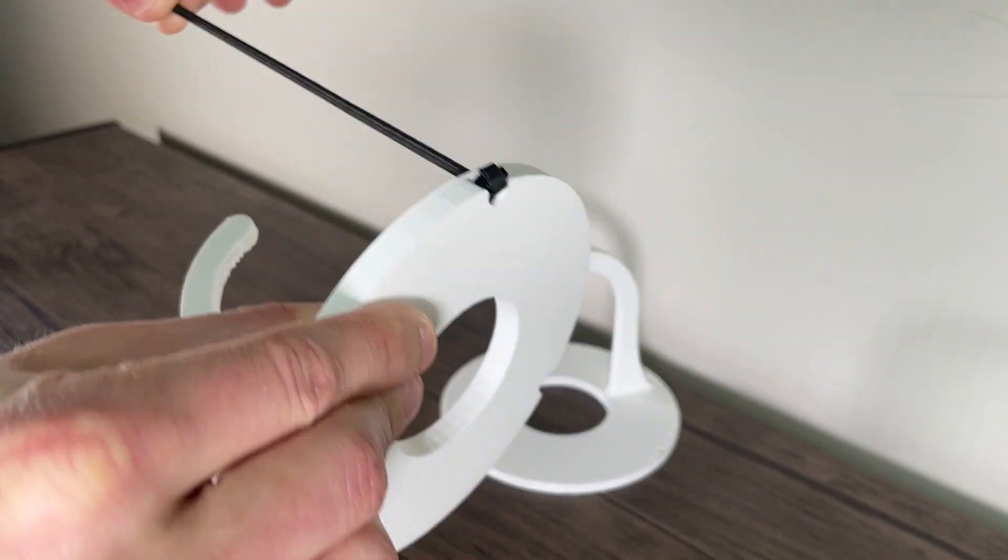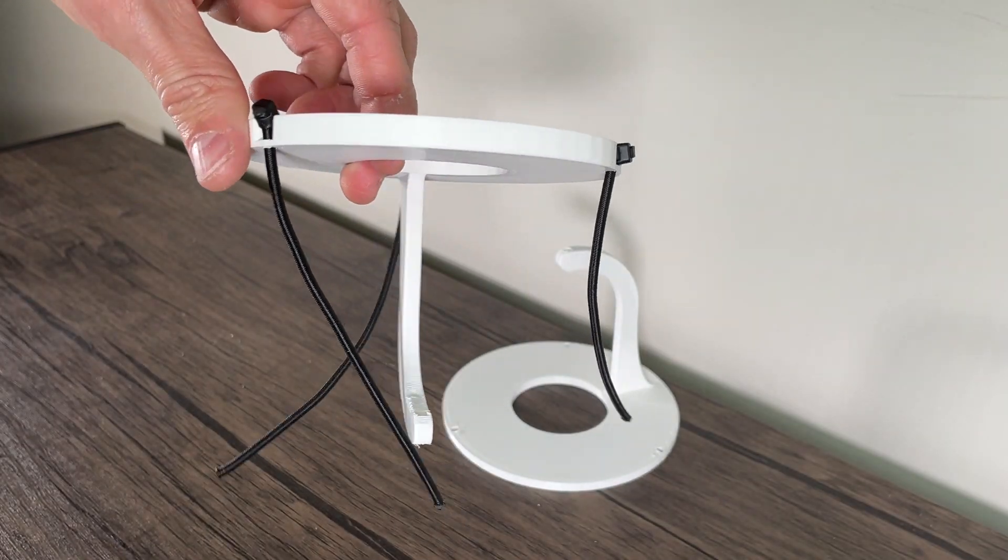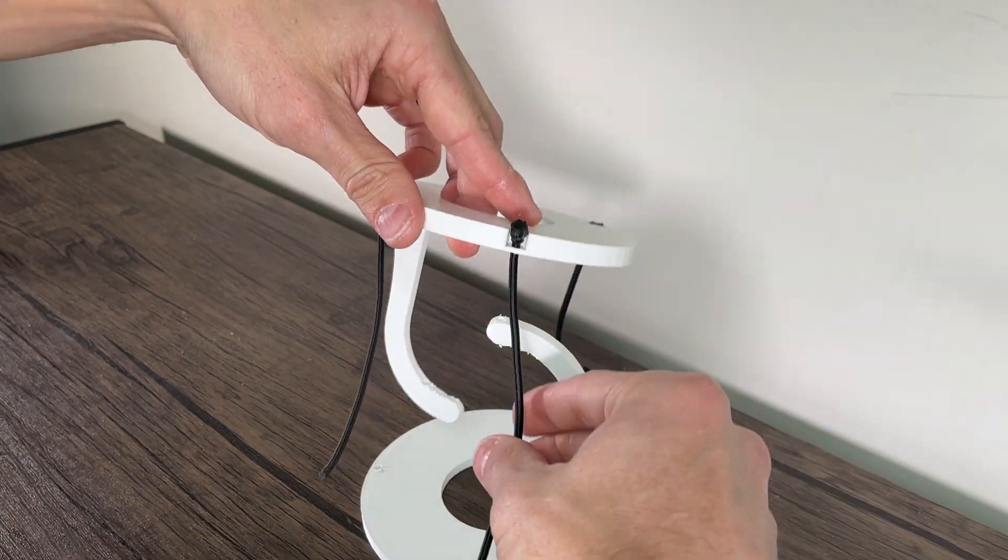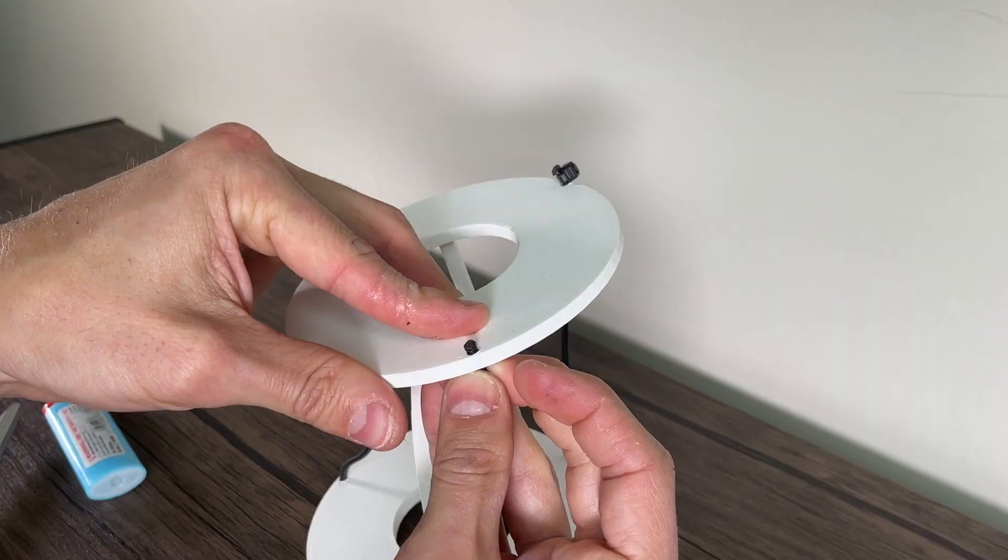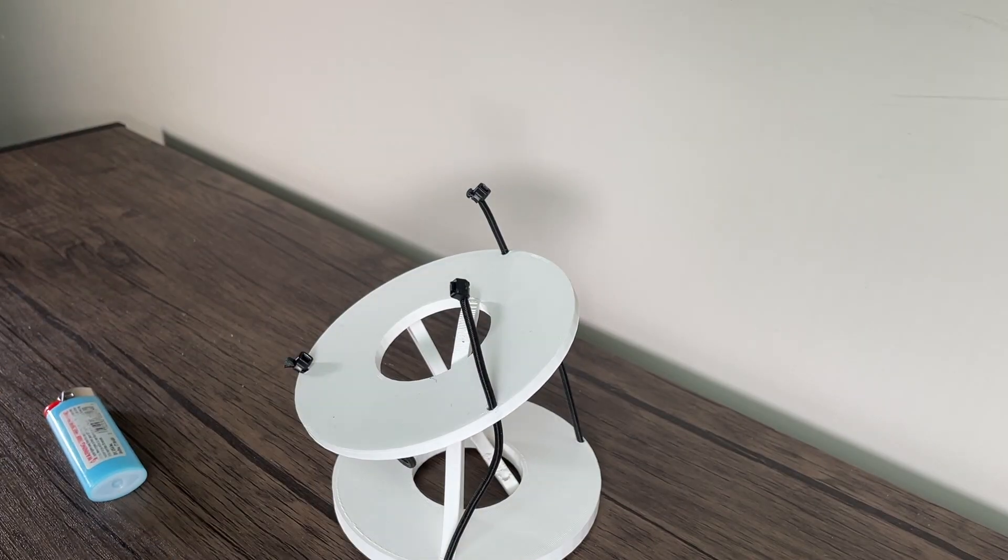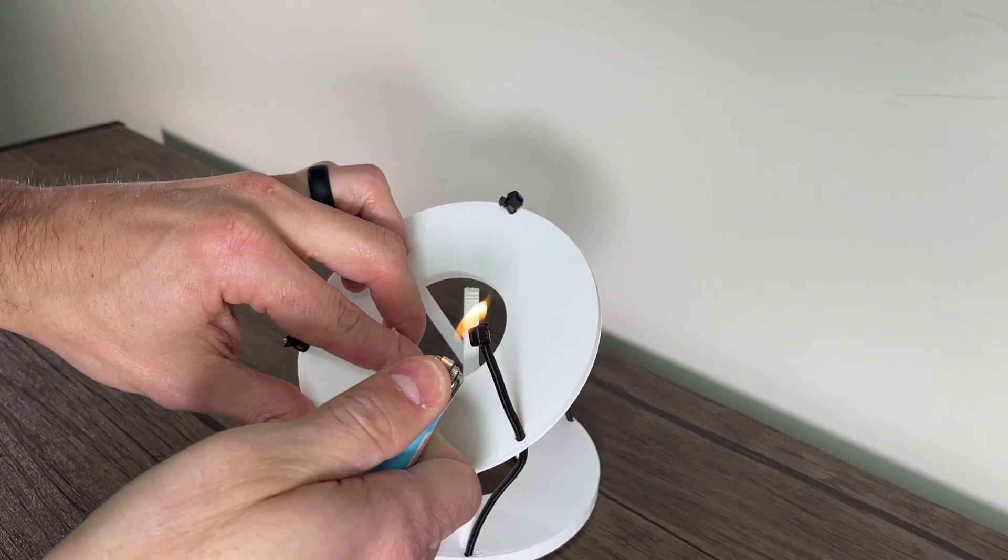Next, feed the three bungees through the holes of the base. Determine the correct orientation of the top piece and feed the three bungee ends through the holes. Repeat the zip tie process on the other three ends of the bungee.